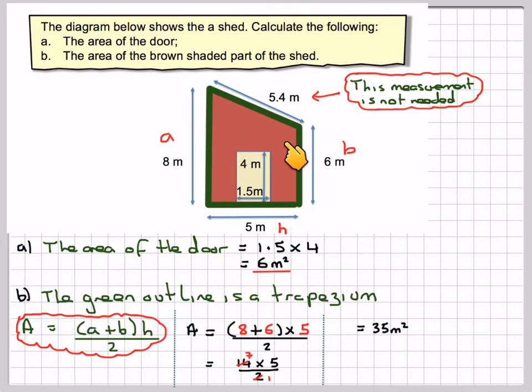So the whole of this area here is 35 metres squared, but we're not asked for that. We're just asked for the brown bit, so that's going to be equal to 35 minus 6, which is going to be equal to 29 metres squared.